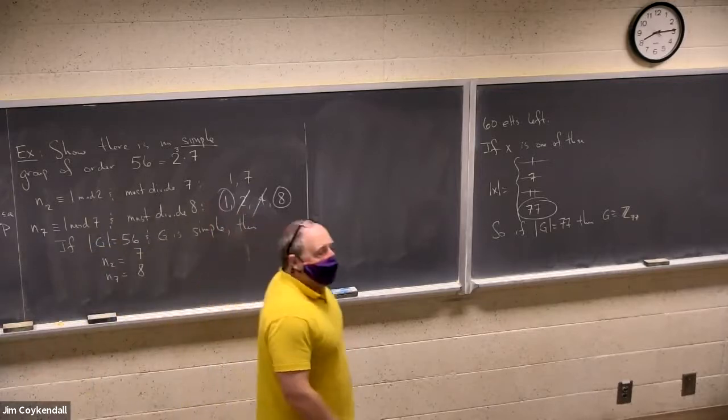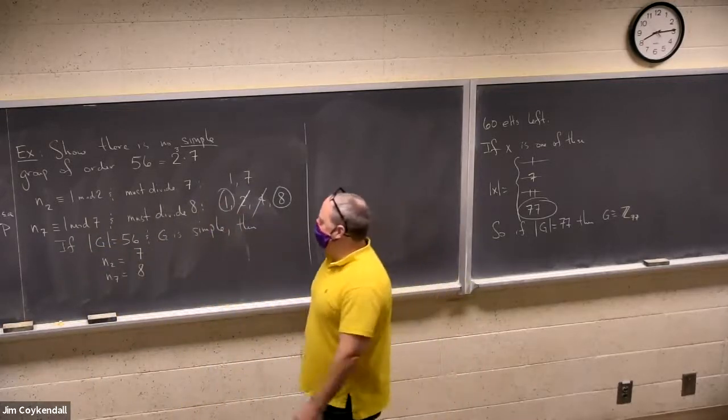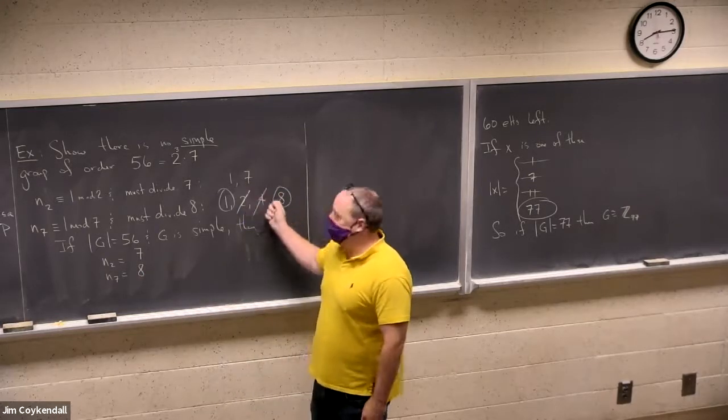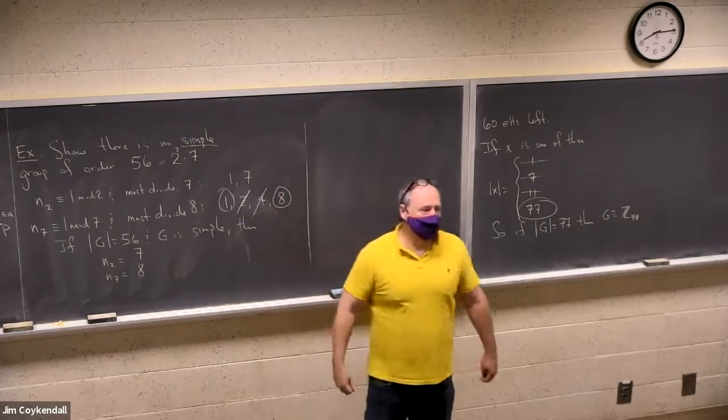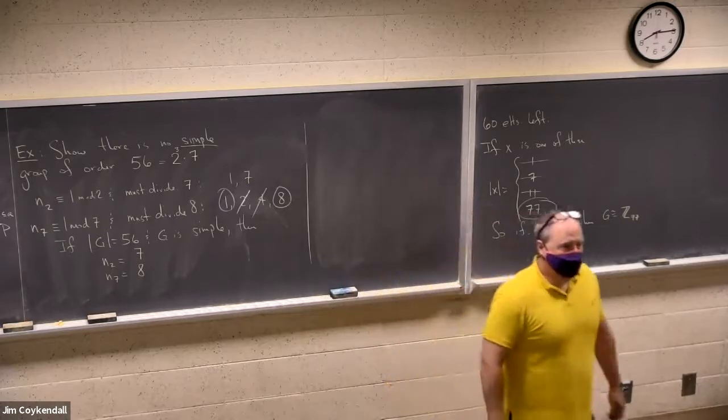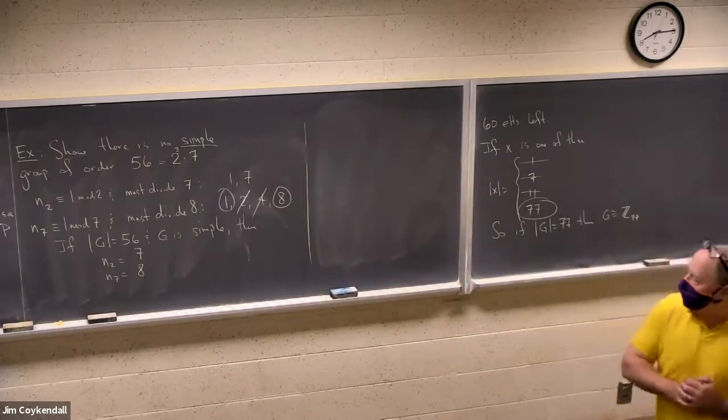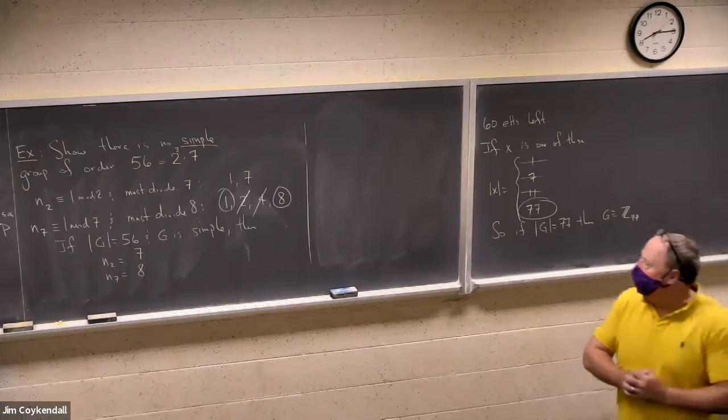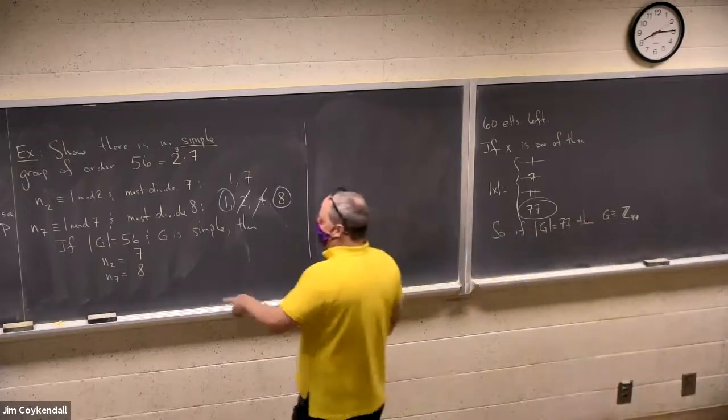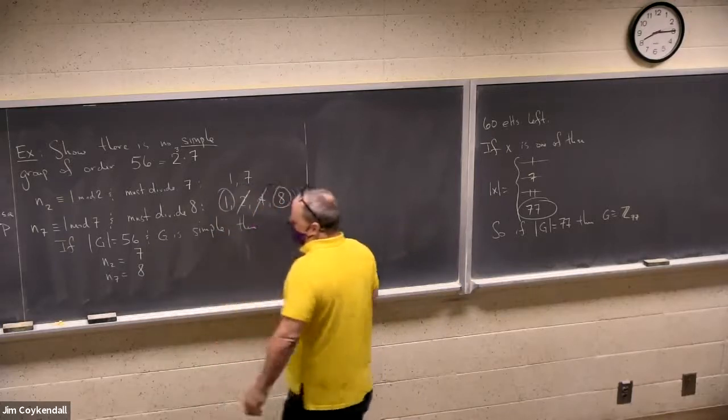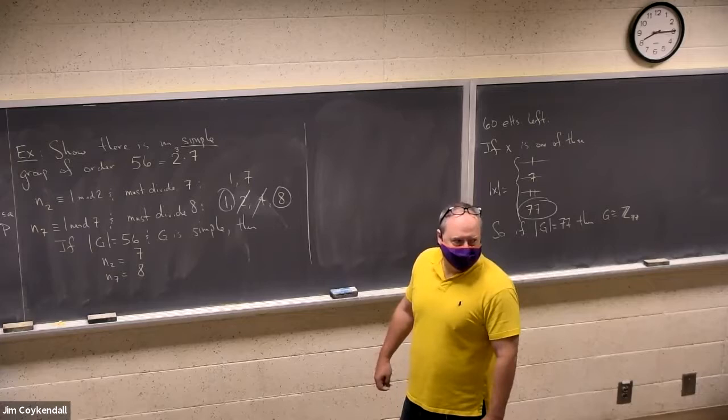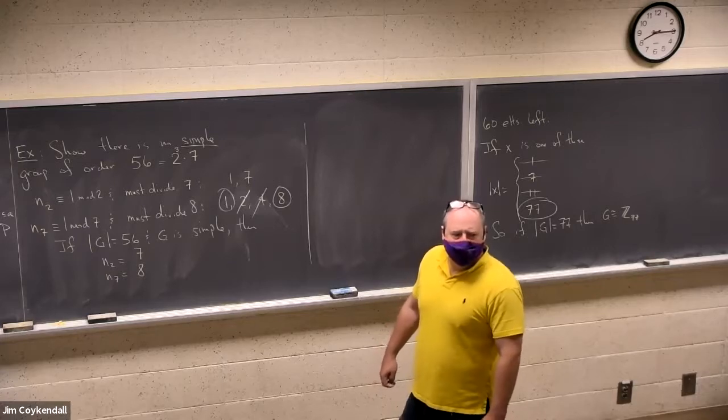That's an important takeaway from this example: if you have a unique Sylow P subgroup, then that is normal. And conversely, if a Sylow P subgroup is normal, then that means there's only one. So under the assumption that we have a simple group of order 56, I had to choose something not one, and I've only got seven and eight to choose. So if such a thing exists, it must have seven Sylow 2 subgroups and eight Sylow 7 subgroups. Anybody see what the problem is?